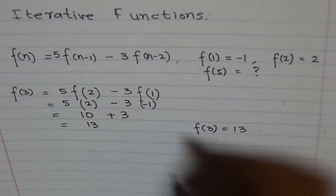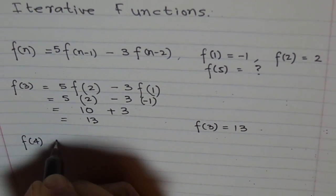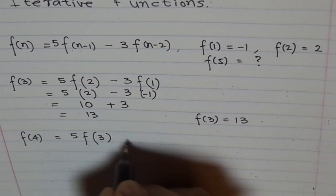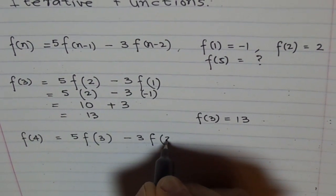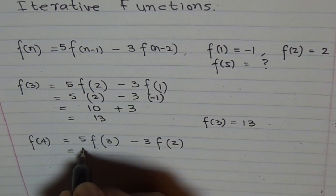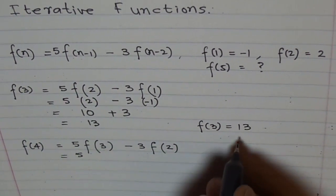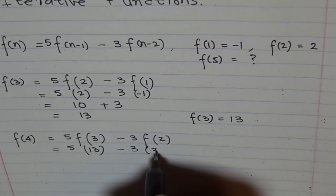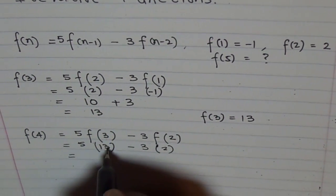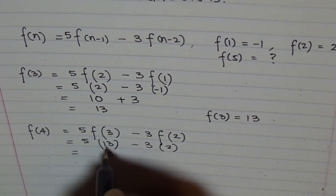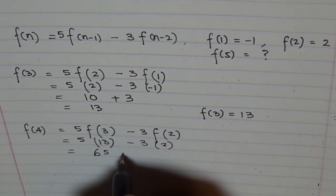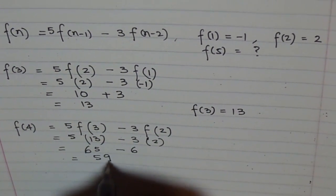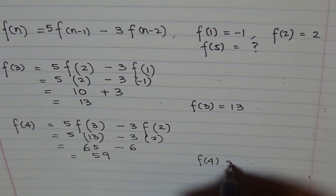Now we can find f(4). f(4) equals 5 times f(4-1), which is 3, minus 3 times f(4-2), which is 2. So 5 times f(3), which we just calculated as 13, minus 3 times f(2). f(2) is given to us as 2. So 5 times 13 is 65, and minus 3 times 2 is 6, which results into 65 minus 6 as 59. So we get f(4) equals to 59.